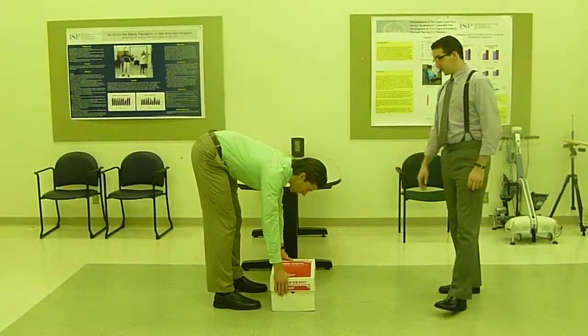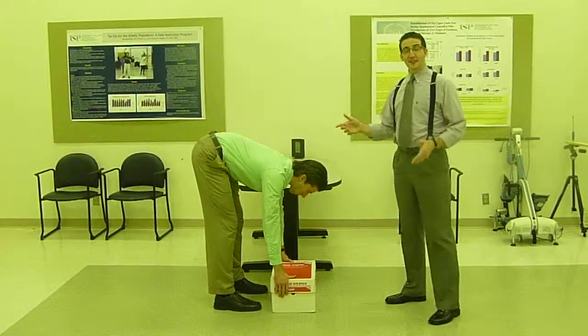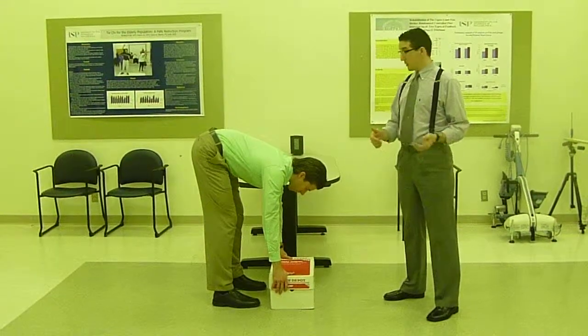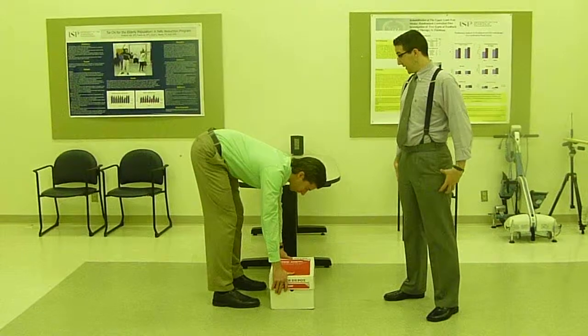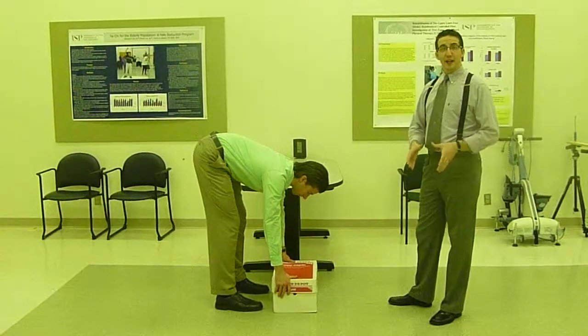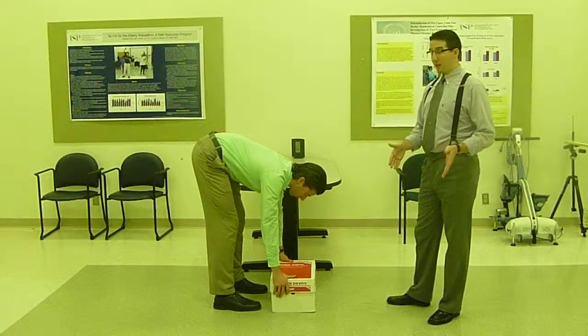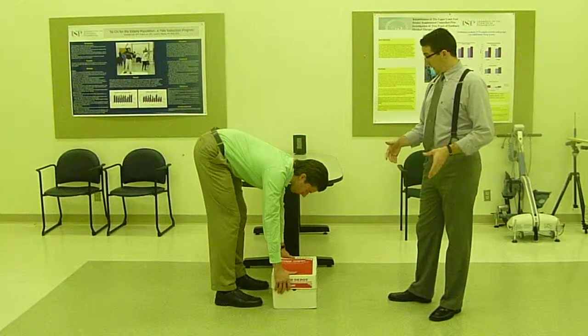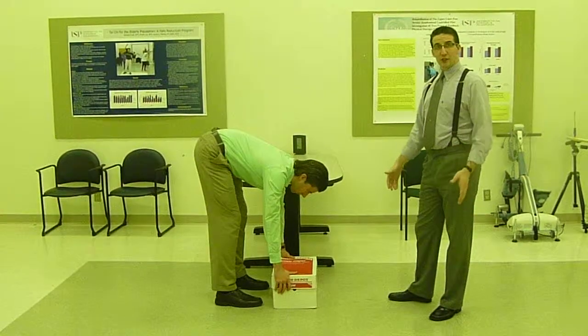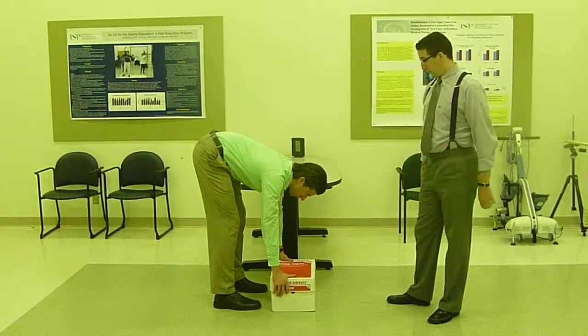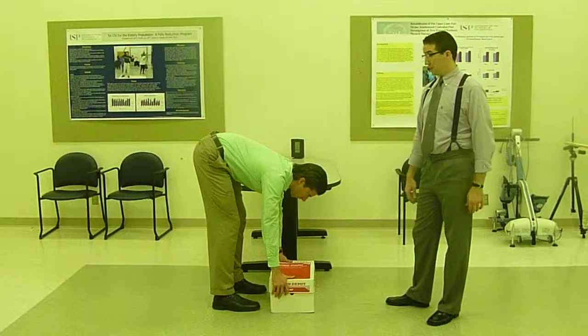Stop right there. Alright, as you can clearly see, Dave is bending with his back as opposed to using his knees. Also, his stance is very narrow, which is not very good to do when lifting a box. And lastly, his arms are real straight and they're kind of out far from his body, which could also put him at risk for injury.